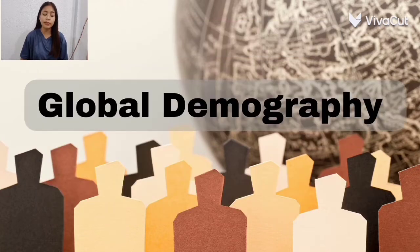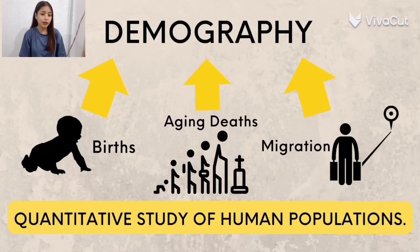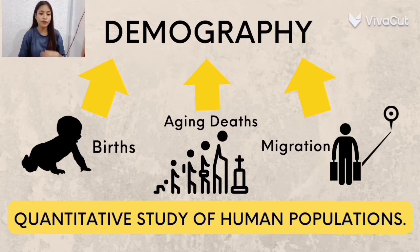Since we are talking about global demography, it is necessary na, syempre, alamin muna natin kung ano nga ba ang ibig sabihin ng demography. The word demography came from ancient Greek — 'demo', which means people, and 'graphy', which means writing, description, or measurement. So, demography is the statistical or quantitative study of human population, especially about births or the fertility rate, aging, deaths, and migration.